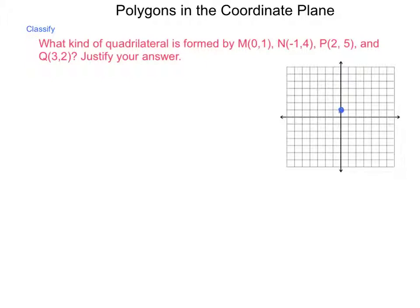M is at (0, 1). N is at (-1, 4). P is at (2, 5). And Q is at (3, 2). So, now, from the appearance, this definitely looks like a parallelogram. But, we could be wrong. It could be a rectangle, a rhombus, a square. I think we can rule out trapezoid. But, let's not jump to conclusions. Let's do the work and prove it.